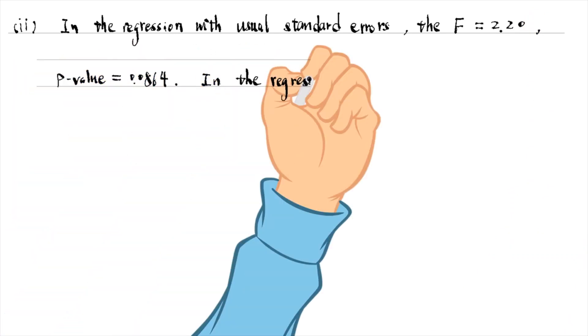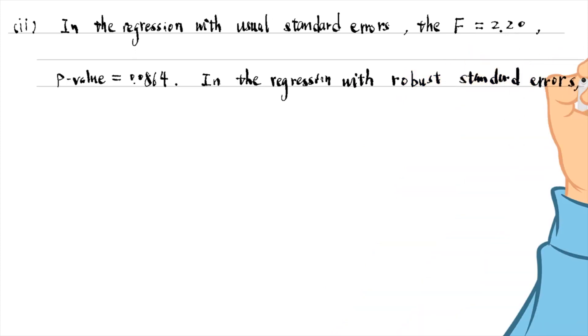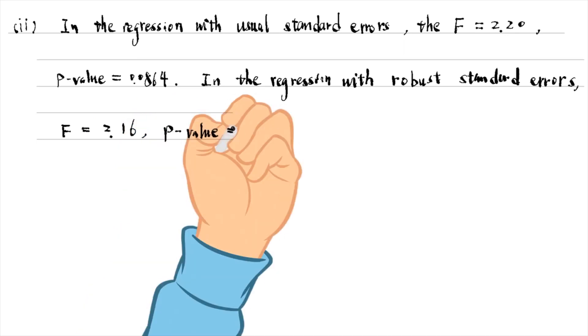In the regression with robust standard errors, the F-statistic is 2.16 and its p-value is 0.09.